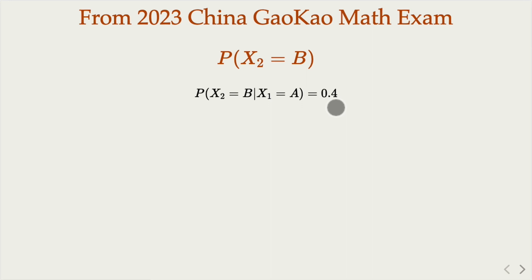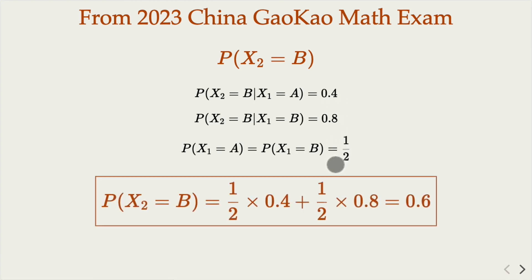If Bob plays, he has a higher probability 0.8 to keep playing. They have equal probability to play the first round. Overall, the chance that the second player is Bob is half times 0.4 plus half times 0.8, and the final answer is 0.6. That's the probability that Bob plays the second practice.